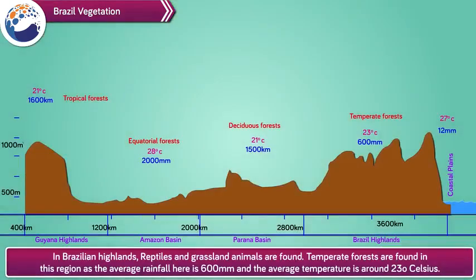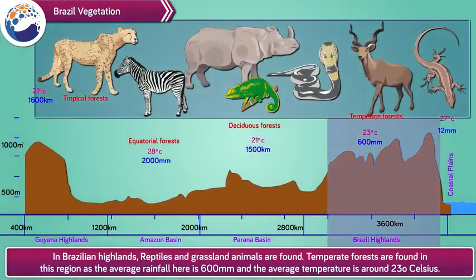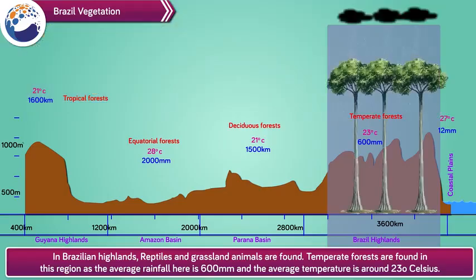In the Brazilian highlands, reptiles and grassland animals are found. Temperate forests are found in this region, as the average rainfall here is 600 mm and the average temperature is around 23 degrees Celsius.